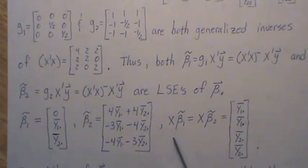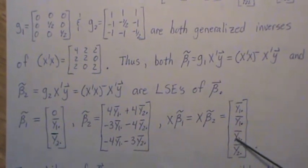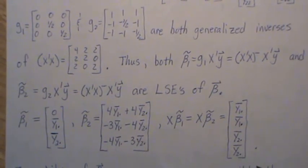But one note is if we pre-multiply both of these by x, so x beta 1 tilde, that's equal to x beta 2 tilde, and they are all equal to this quantity here, where it's the group one mean, group one mean, group two mean, group two mean.